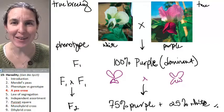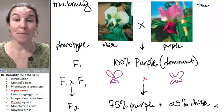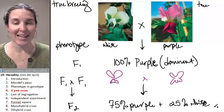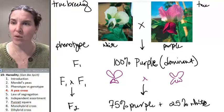How did this happen? He did it over and over with a bunch of different traits, and each time he figured out that there was this ratio.